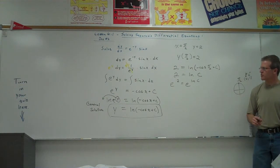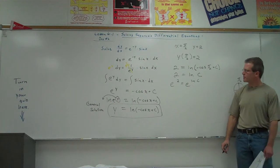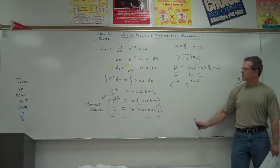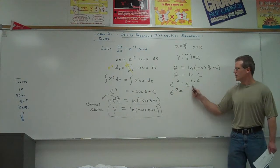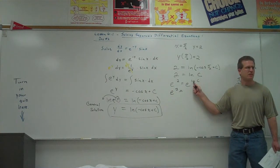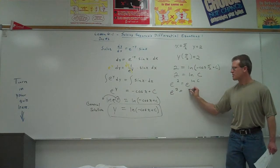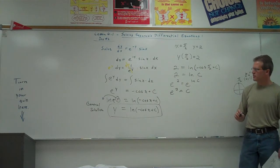So now you have e squared on the left. What's going to happen here if you have an e and a natural log? Yeah, they undo each other. They're inverses, so you just get c on the right side. So our constant's e squared.